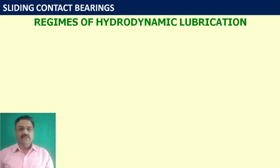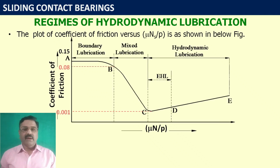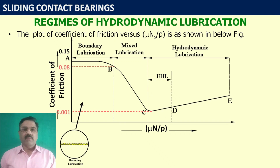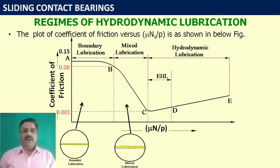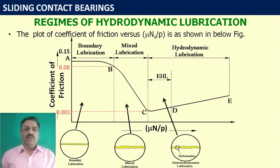Now let us see the different regimes of lubrication. Consider the graph of coefficient of friction versus the bearing number μ·Ns/p. From the figure, the curve is divided into three main parts: boundary lubrication, mixed lubrication, and hydrodynamic lubrication. In boundary lubrication, there is no complete separation of surfaces; metal-to-metal contact takes place at most locations, with only a little separation at some places.